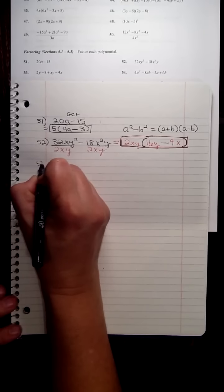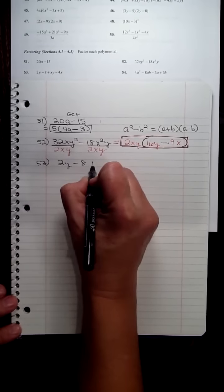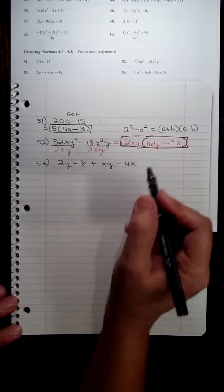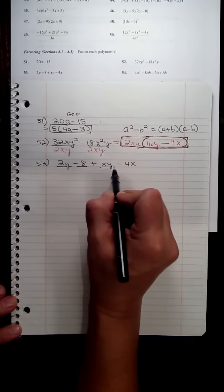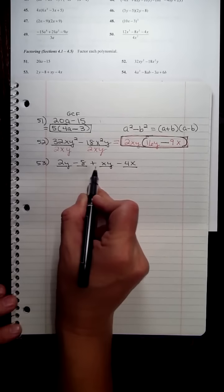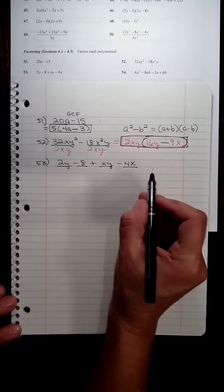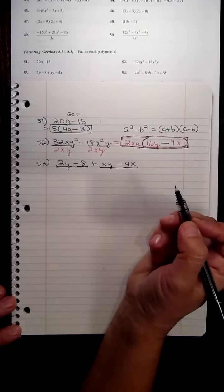On number 53, we have 2y minus 8 plus xy minus 4x. The first step is we look if there's a common factor in all four terms. And there's nothing that will divide into all of these. So then we split it up and look at the first two separately from the second two.